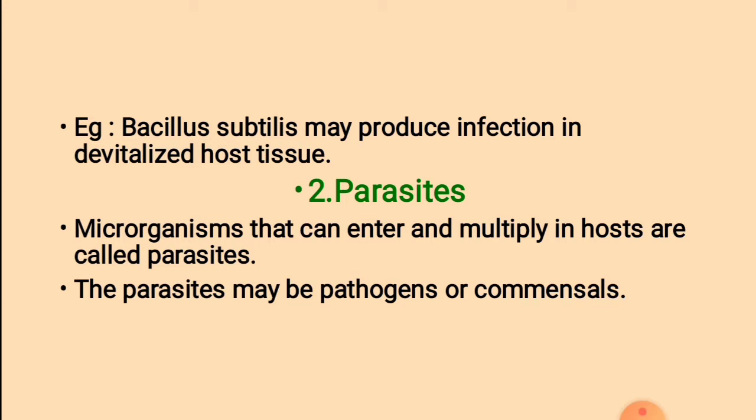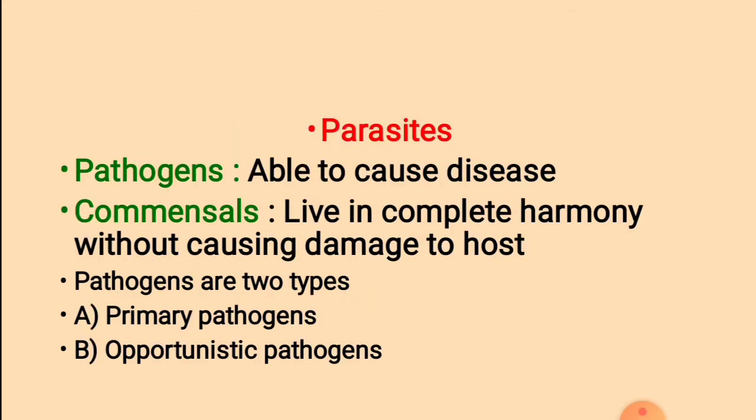2. Parasites. Microorganisms that can enter and multiply in a host are called parasites. The parasites may be pathogens or commensals. Pathogens are able to cause disease — disease-causing organisms are known as pathogens. Commensals are organisms that live in complete harmony without causing damage to the host, and act as natural flora or normal flora.